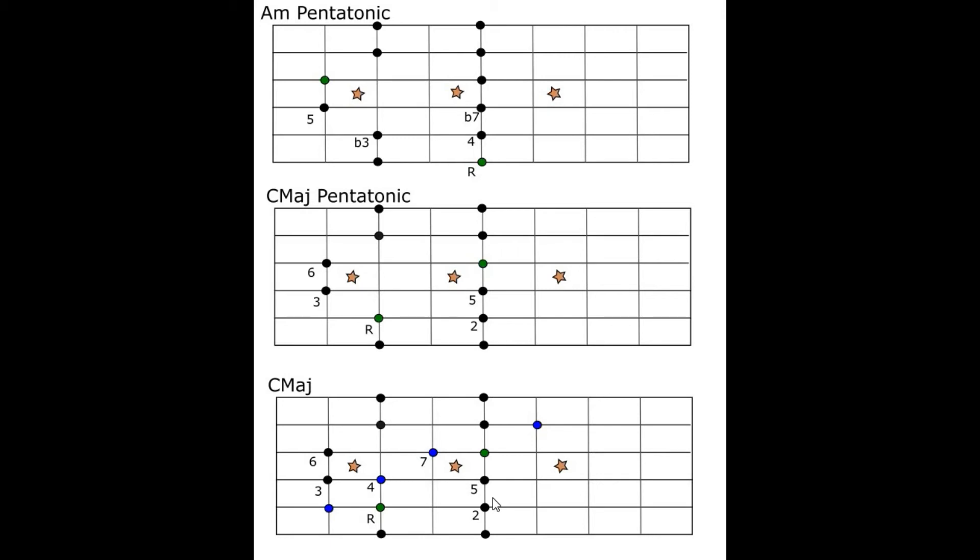This just, again, makes sure that the pattern tries to stay as compact as possible and avoiding having two whole steps on a single string and maintaining the patterns that we've seen in the previous pentatonic shapes for going from the major pentatonic into the major scale.